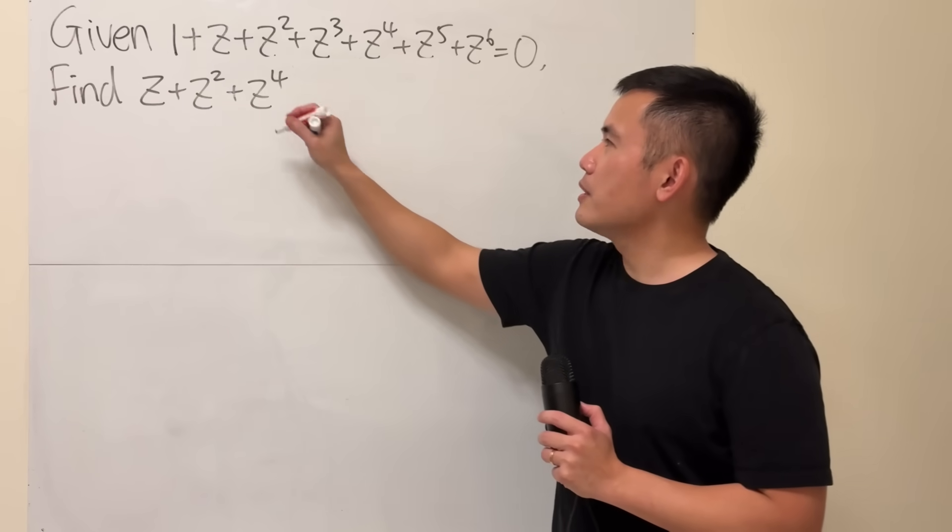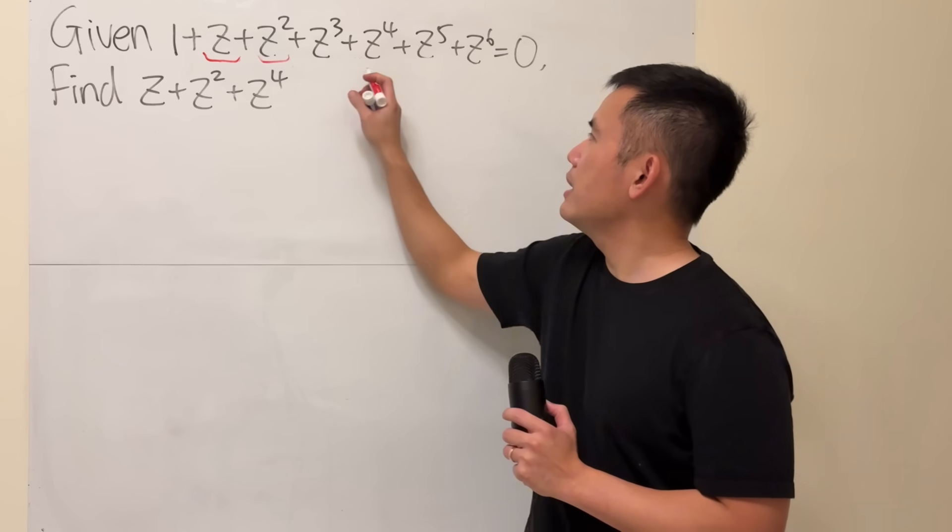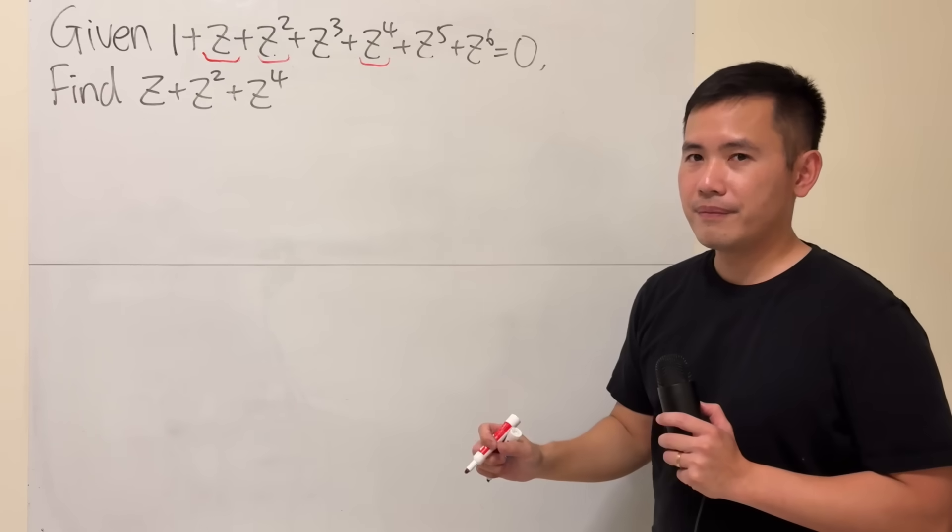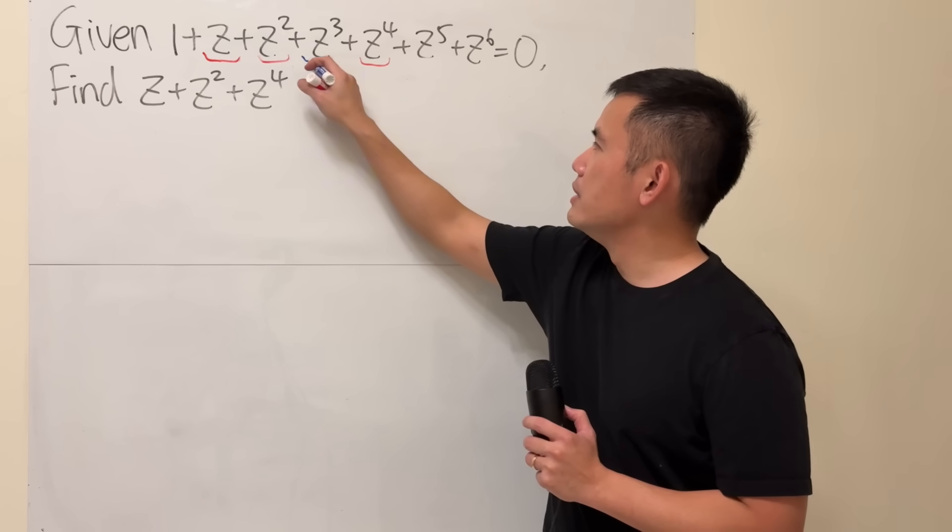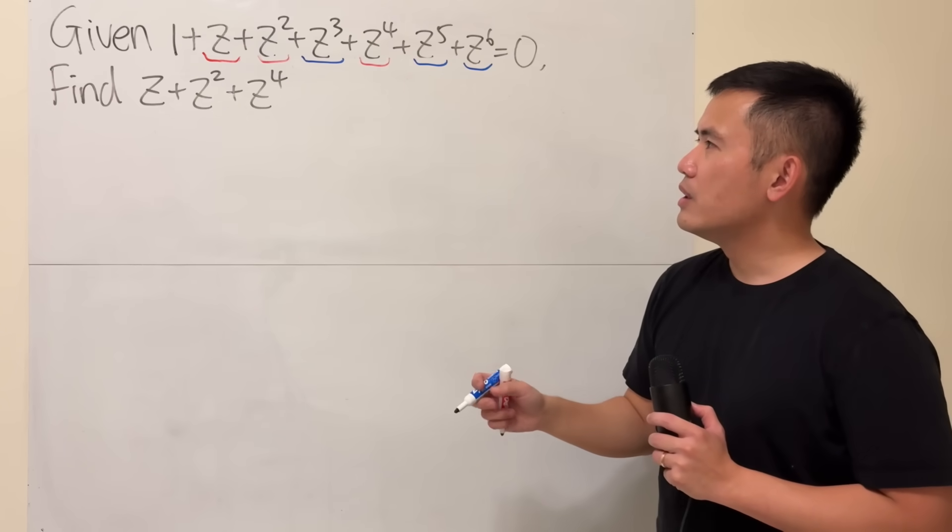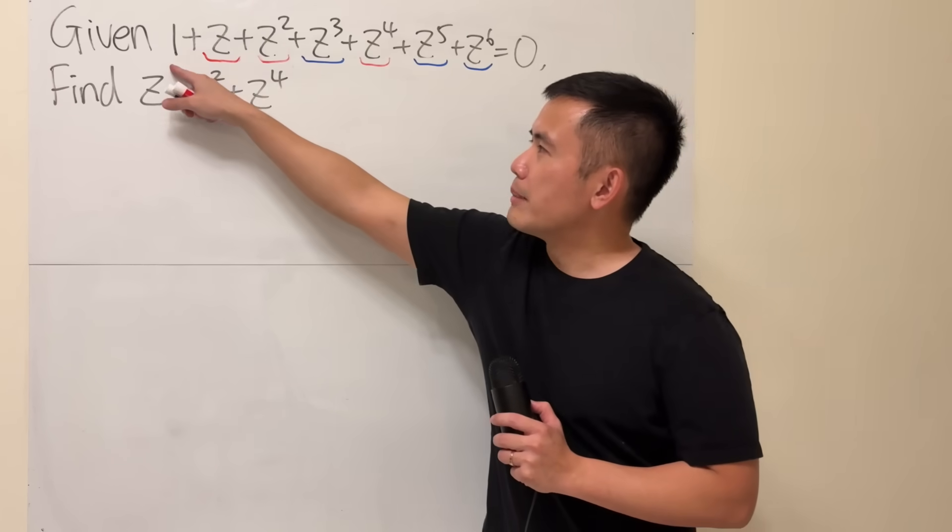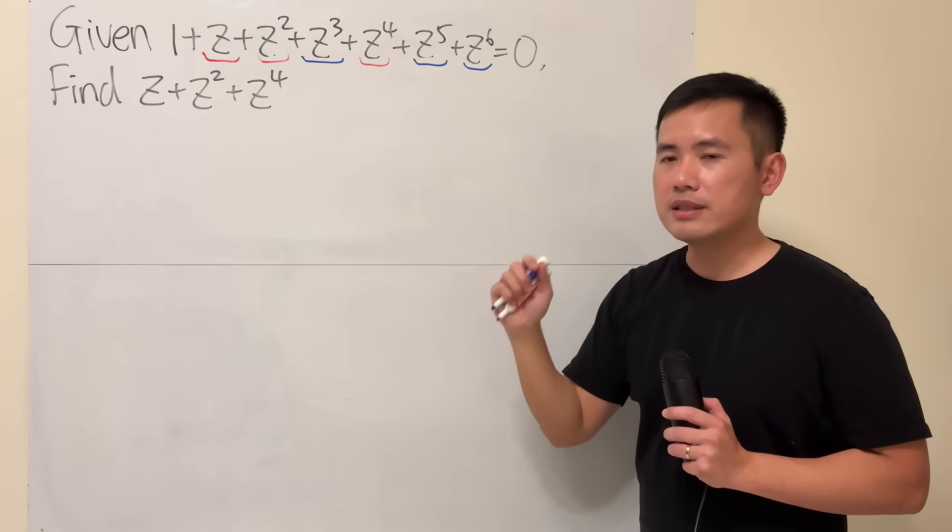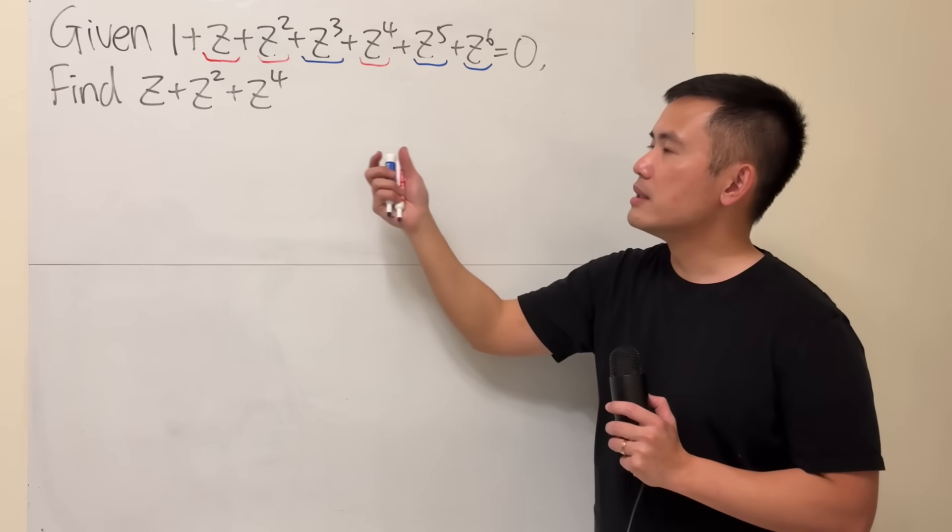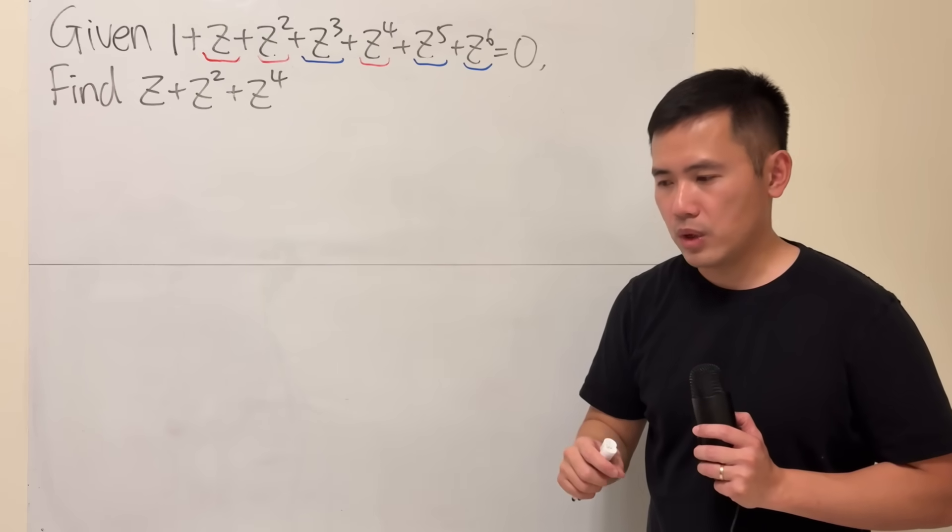Notice that these three terms are here, here, and here. And of course, we have this, this, and that. If you look at these right here, we can just subtract one to both sides.